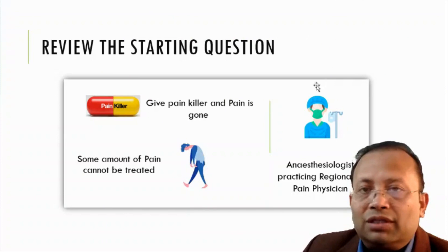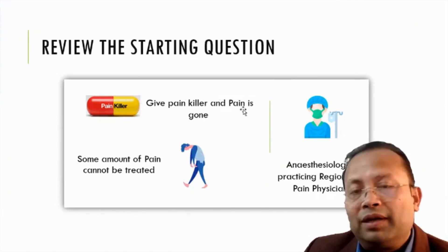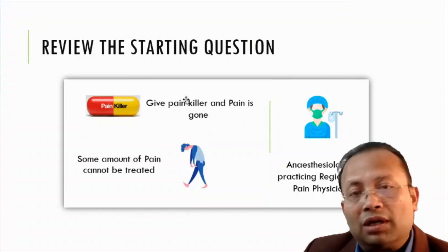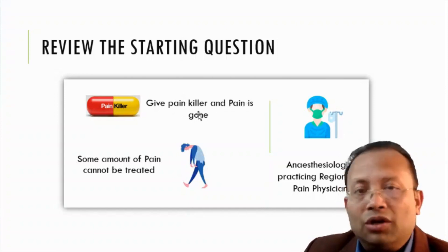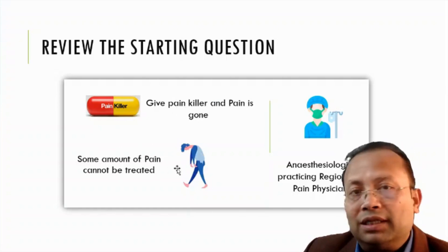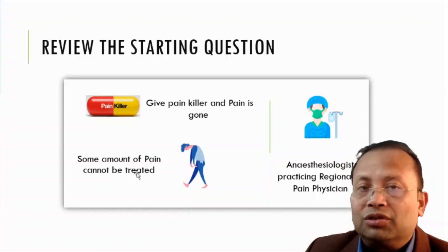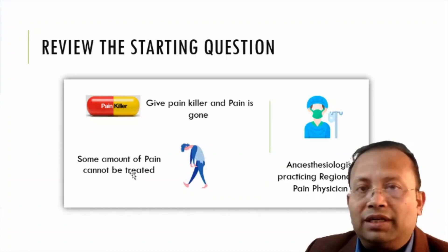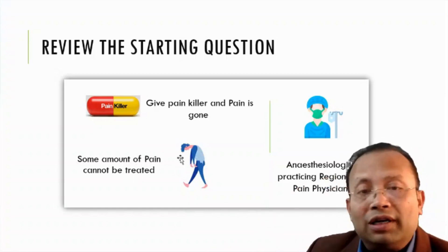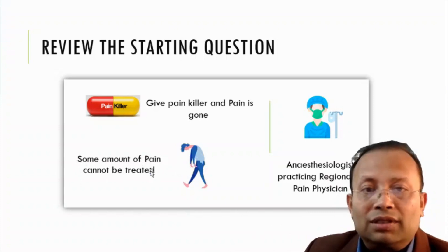Reviewing the starting questions: Is it possible to give the same painkiller to all patients without understanding whether the pain is neuropathic or nociceptive? No — this cannot be successful. Regarding the claim that some pain cannot be treated: have you tried all conservative options and all intervention options with different intervention intentions? If you have tried everything and failed, then you may say so. But otherwise, we cannot say that pain cannot be treated.